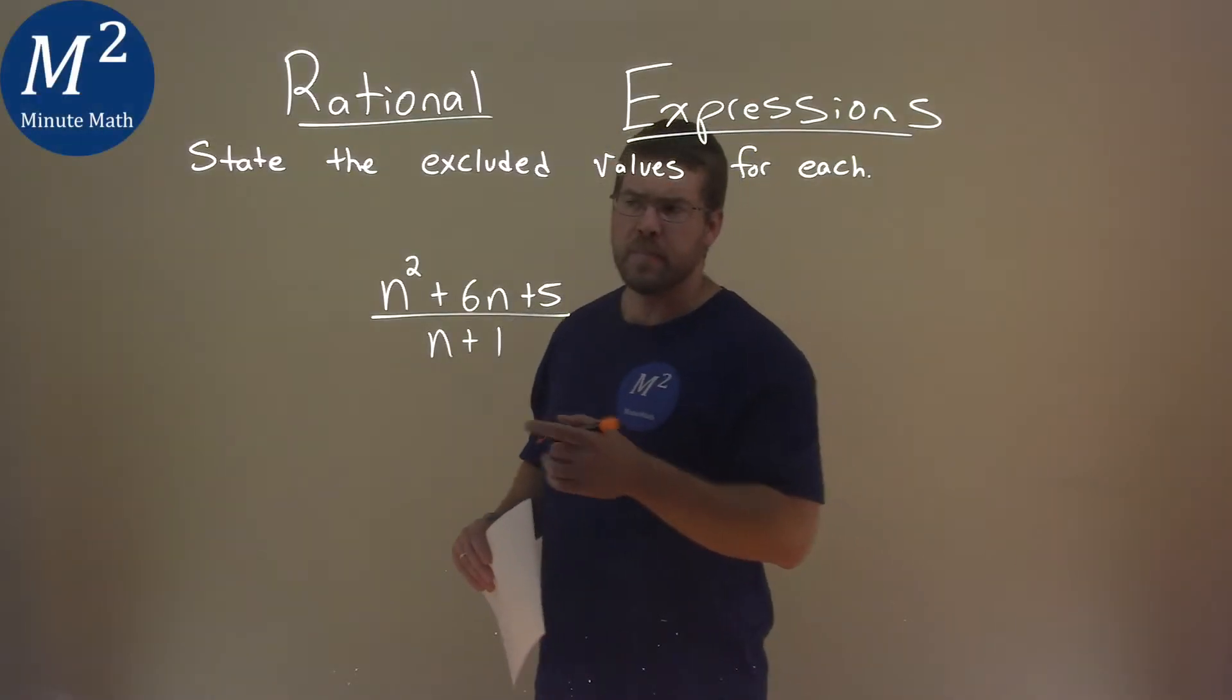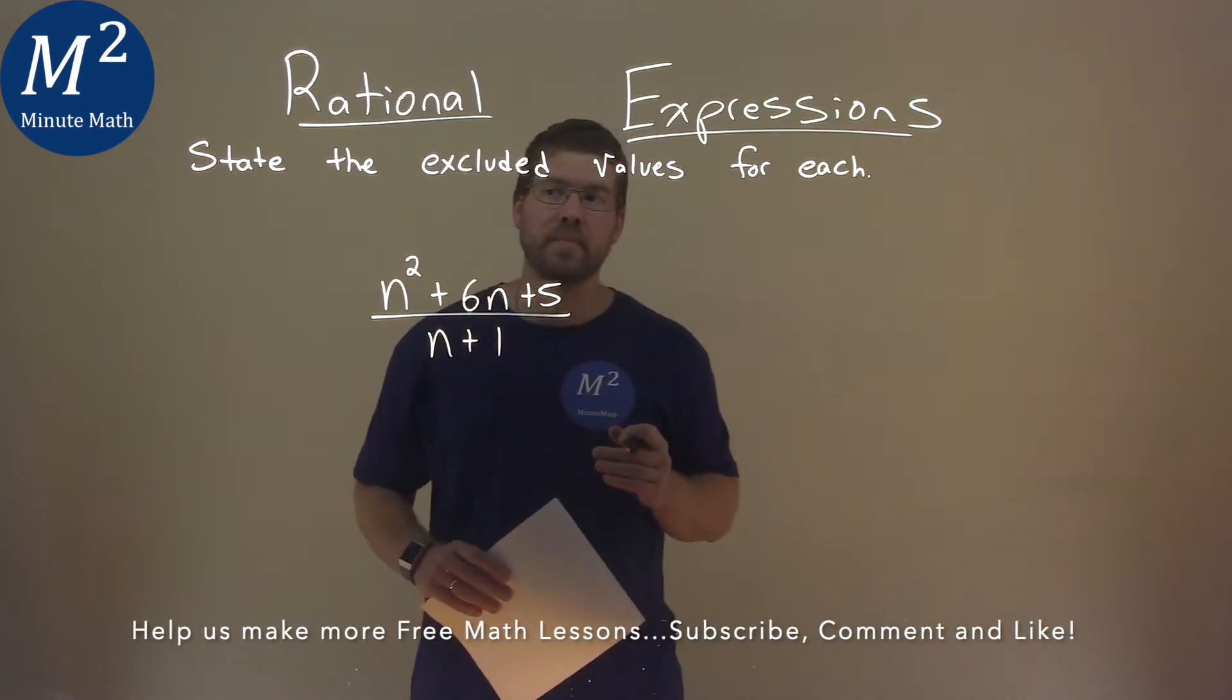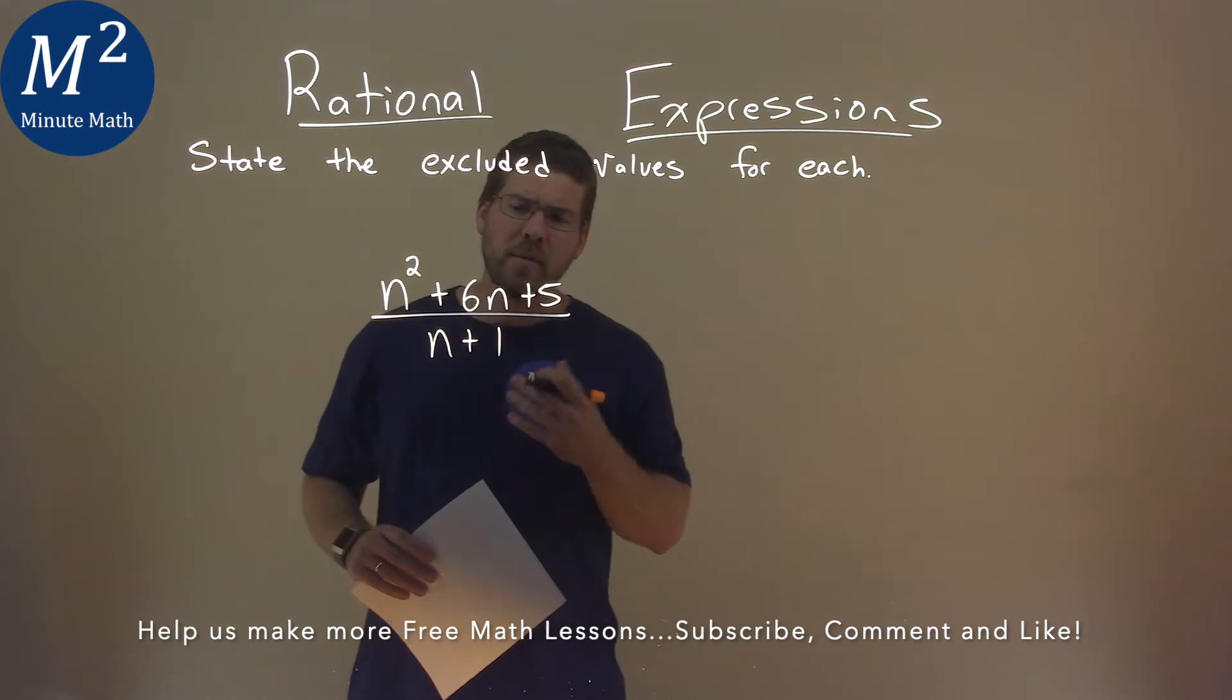We're given this problem right here, n squared plus 6n plus 5 over n plus 1, and we need to state the excluded values here, but what am I looking for?